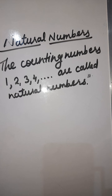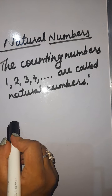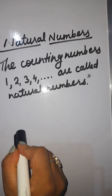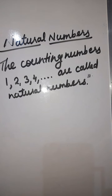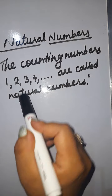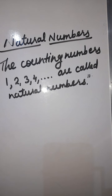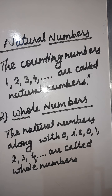You've studied the number system up to 10 lakhs with 5-digit and 6-digit numbers. So the natural numbers start from counting number 1 — 1, 2, 3, 4 and generally these counting numbers are called natural numbers.